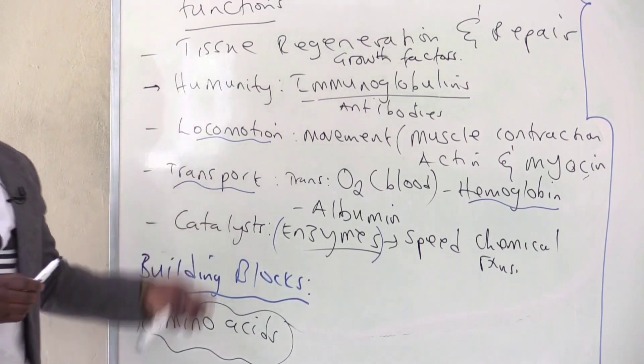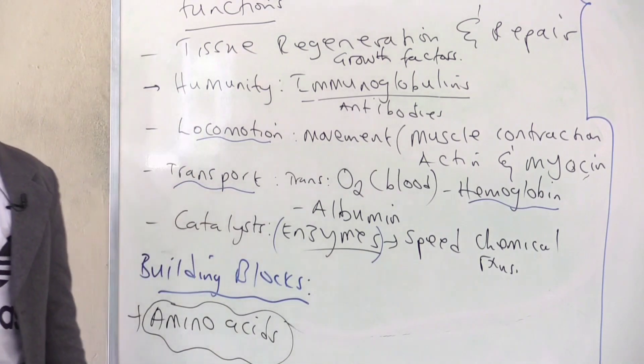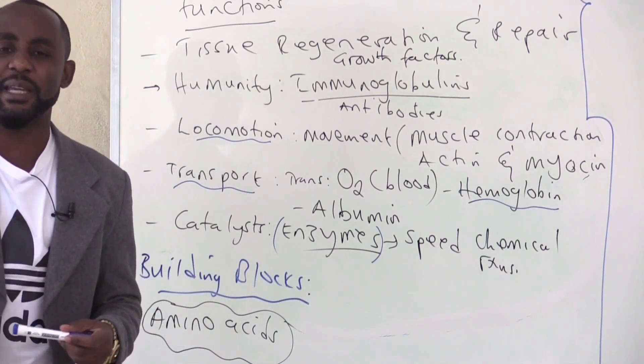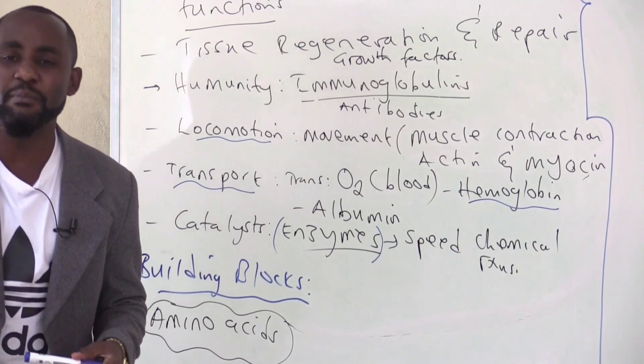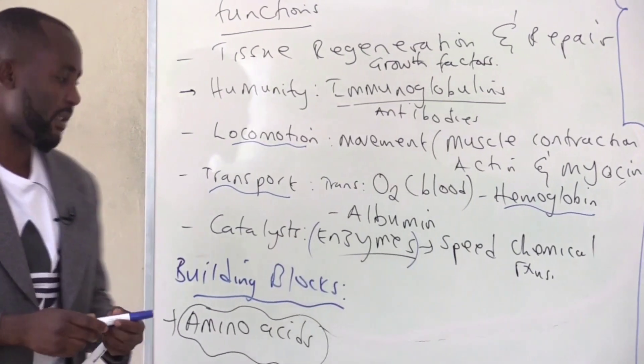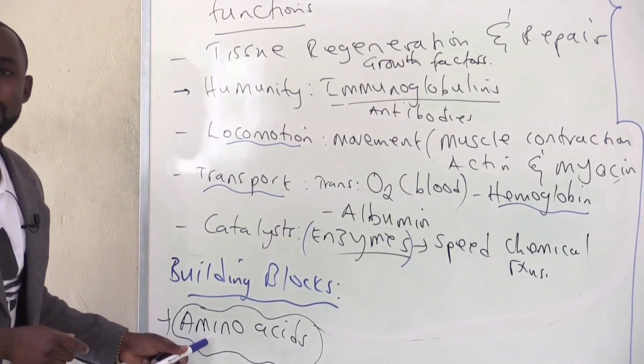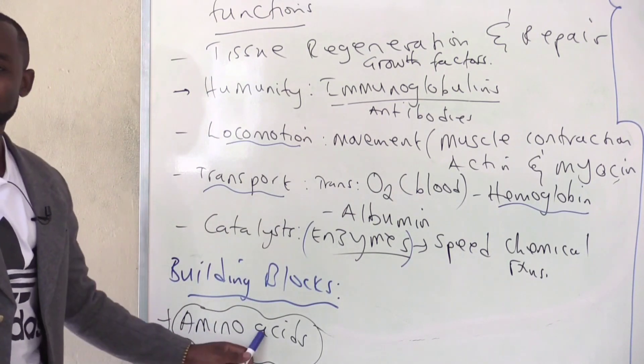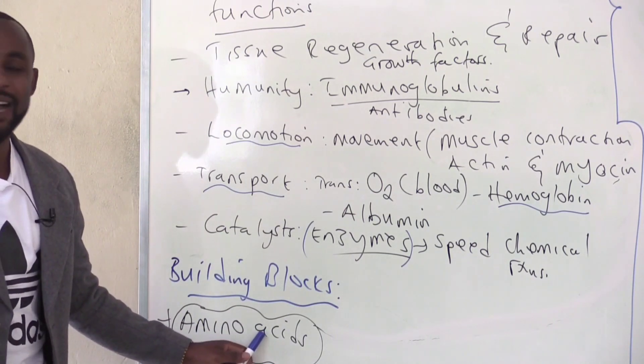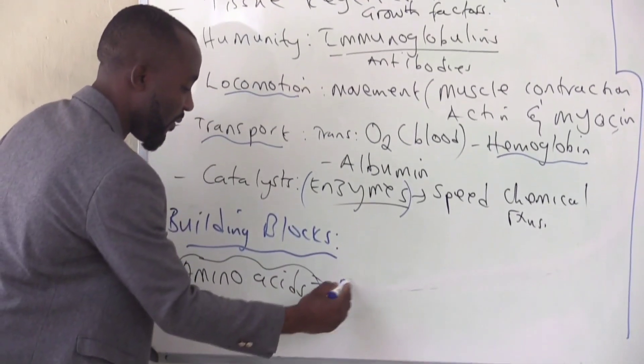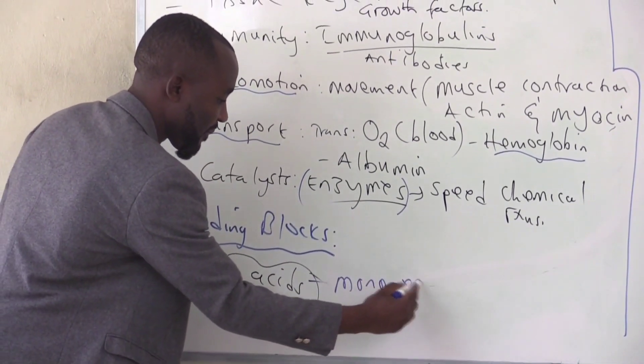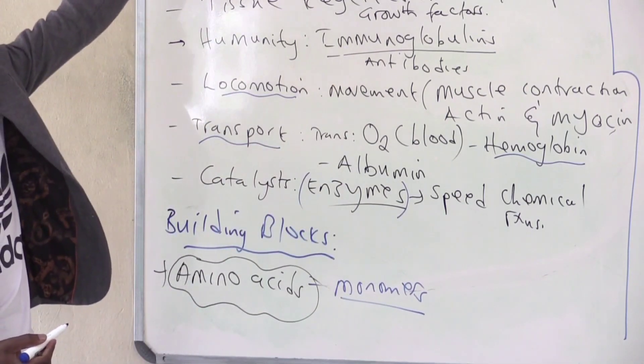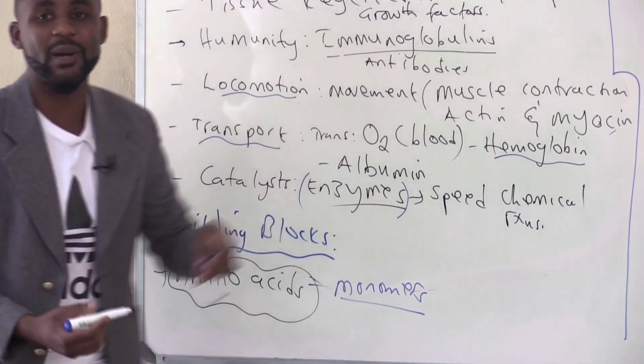So having looked at the physiological functions, we need to ask ourselves one important question. What do we need to make a protein? What are the building blocks of proteins? It is amino acids. So we get amino acids as raw materials, as monomers for proteins.